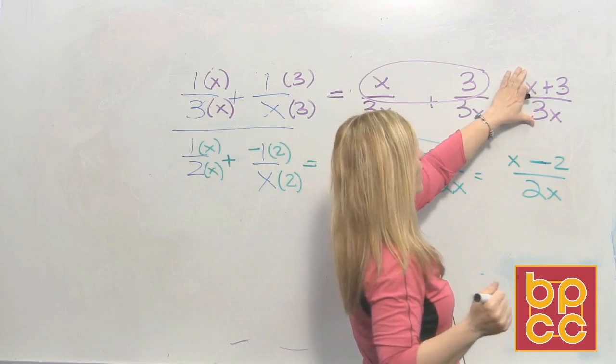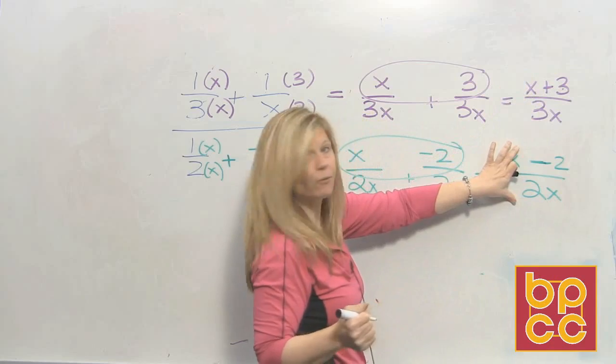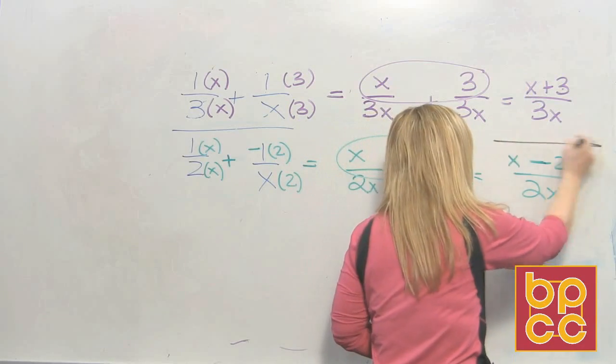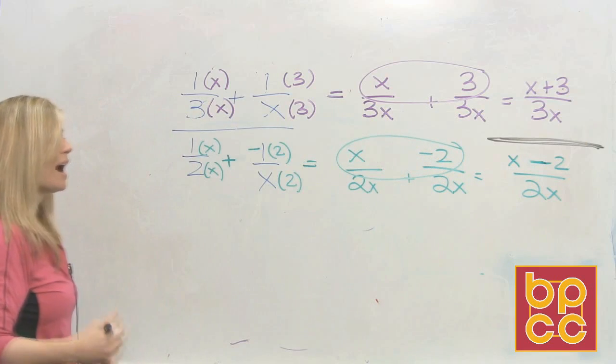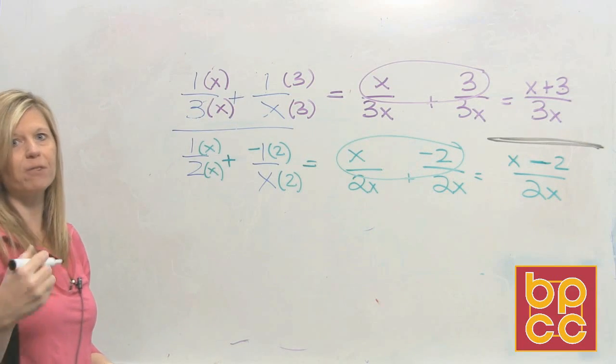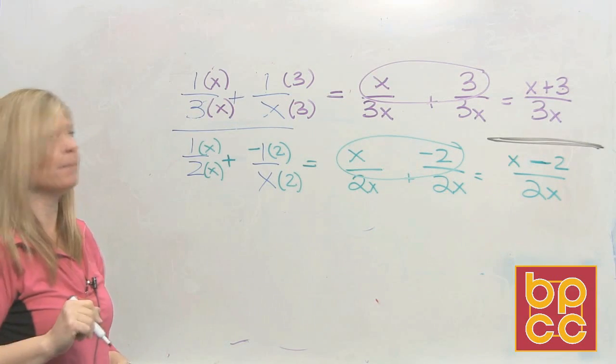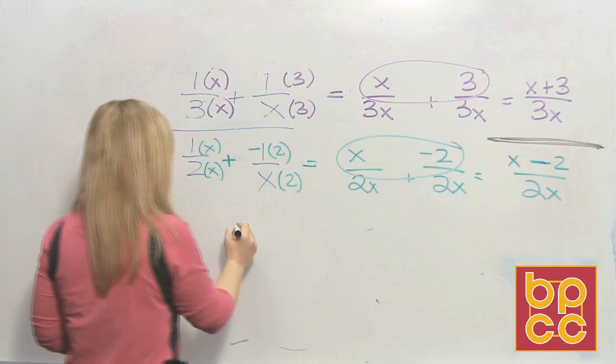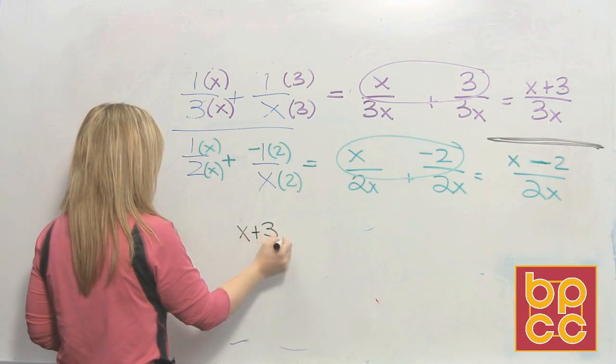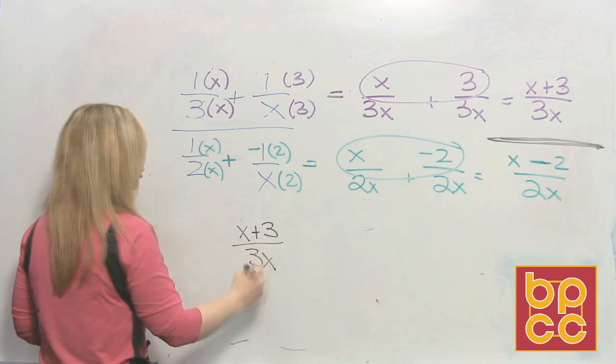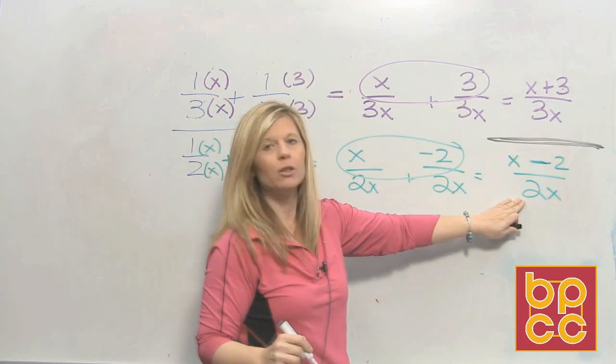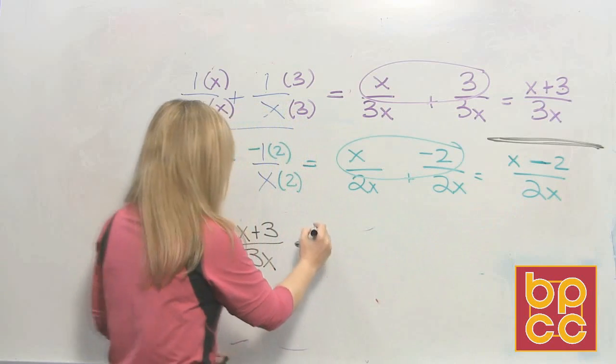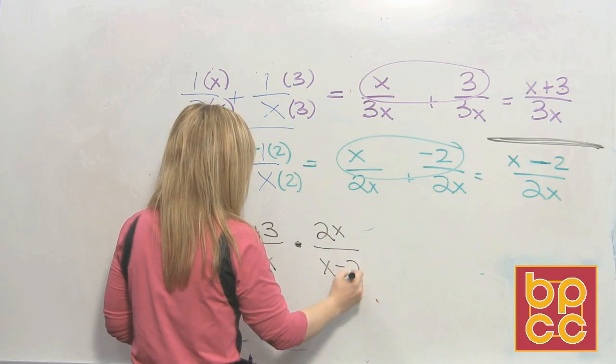Again, what you did is you went from having two separate fractions to having one fraction. There's only one bar. Now that you have one fraction in the numerator, one fraction in the denominator, now we can do division. So what's the rule? Dividing fractions easy as pi. Flip the second and multiply. So the first fraction stays x plus 3 over 3x. You change division into multiplication by doing the reciprocal, the multiplicative inverse, which would be 2x over x minus 2.